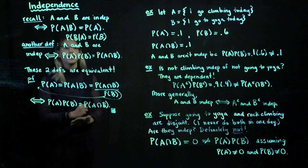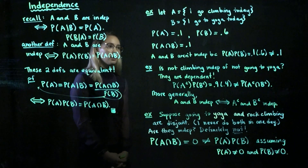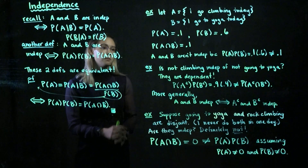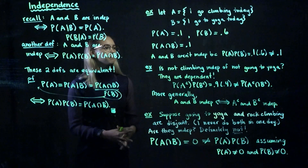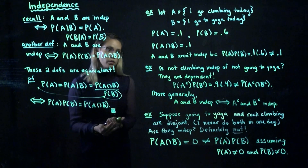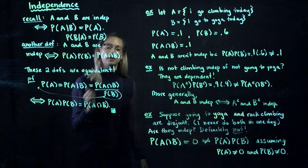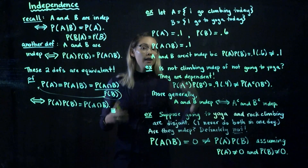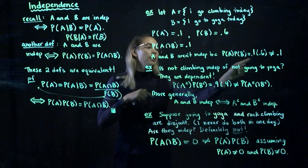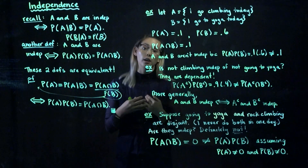Let's have two events. A is going to be the event that I go rock climbing today, and B is the event that I go to yoga today. Suppose that I go climbing about 10% of the days and that I go to yoga about 60% of the days. Furthermore, assume that I do both on any given day about 10% of the time. So first, let's think about whether A and B are independent — in other words, is going to yoga independent of going climbing? We're going to find that A and B are not independent because the probability of A times the probability of B is 0.1 times 0.6, and this is definitely not equal to the probability of A intersect B. So definitely going climbing and going to yoga are dependent events.